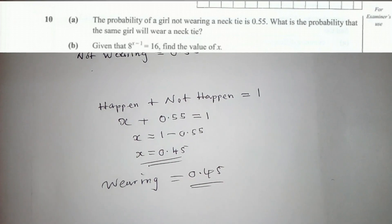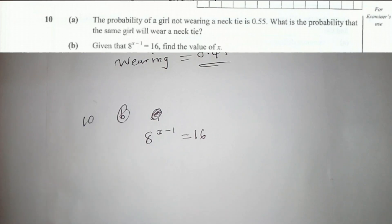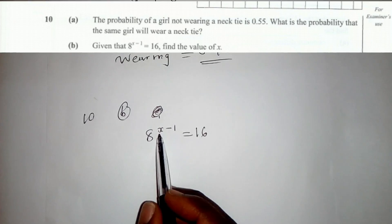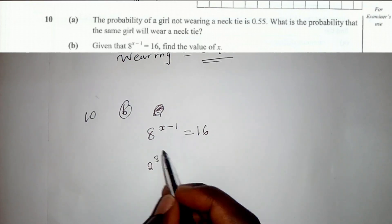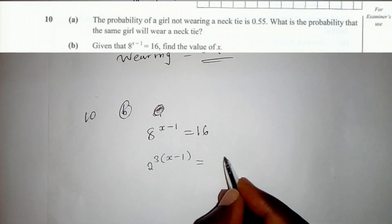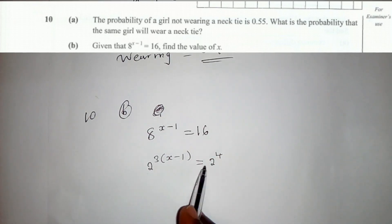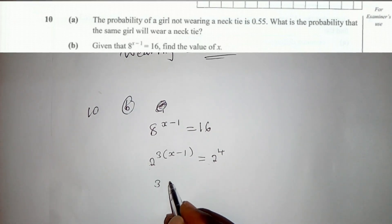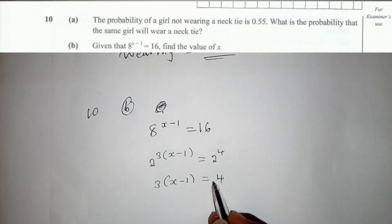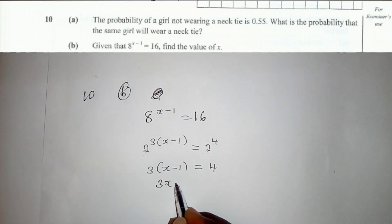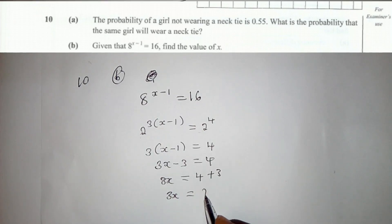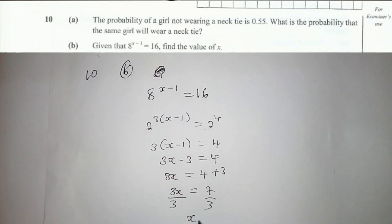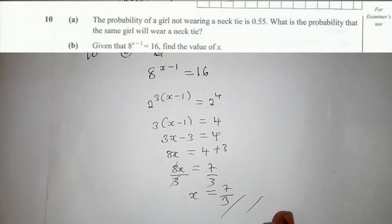For Question 10b, given that 8 to the power (x minus 1) equals 16, find the value of x. We balance the bases: 8 equals 2³ and 16 equals 2⁴. So both sides have base 2. We now equate the powers: 3(x minus 1) equals 4, which gives 3x minus 3 equals 4, so 3x equals 7. Dividing by 3, x equals 7 over 3. Thank you very much for watching.